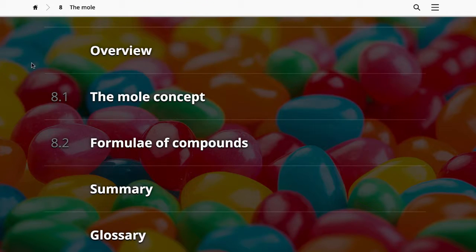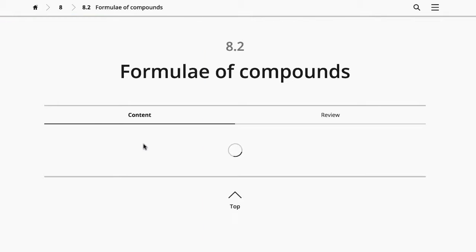Next, we'll look at a module. The modules are where you'll find most of the chapter content. A chapter generally contains two to five modules. Let's have a look at module 8.2.